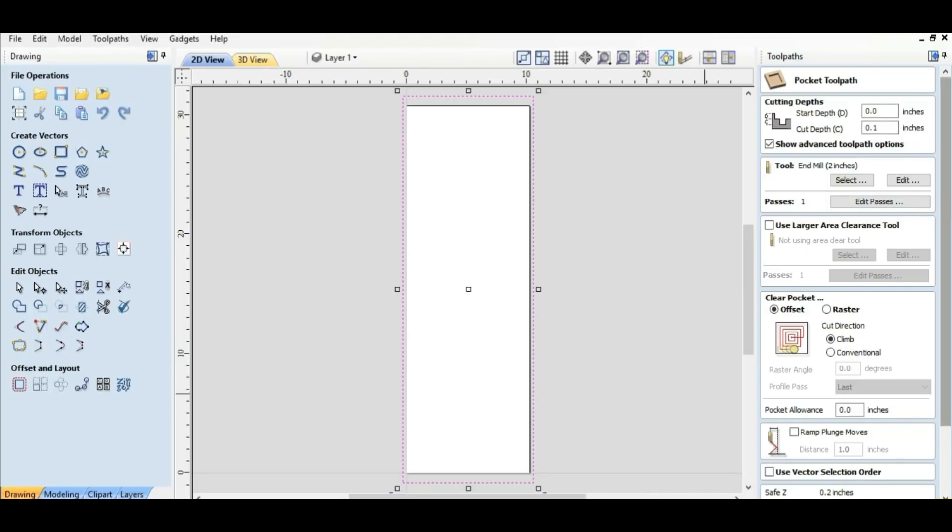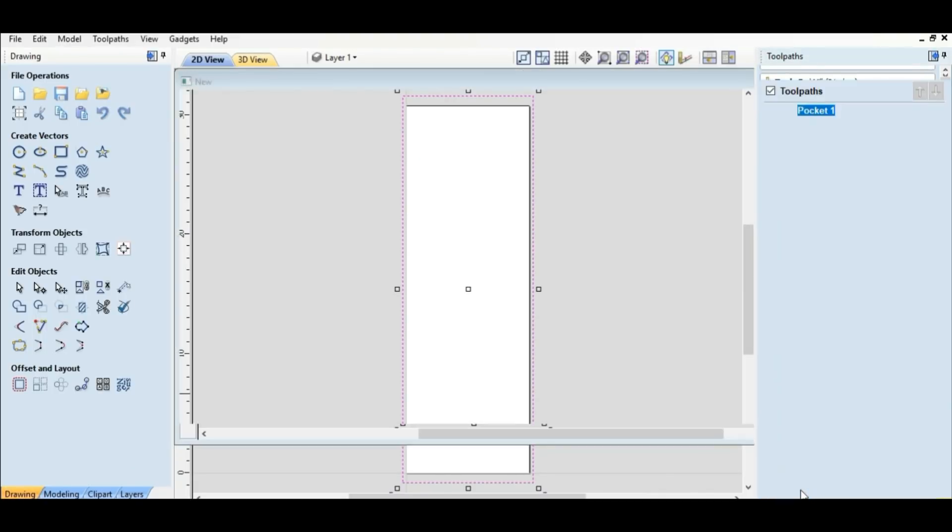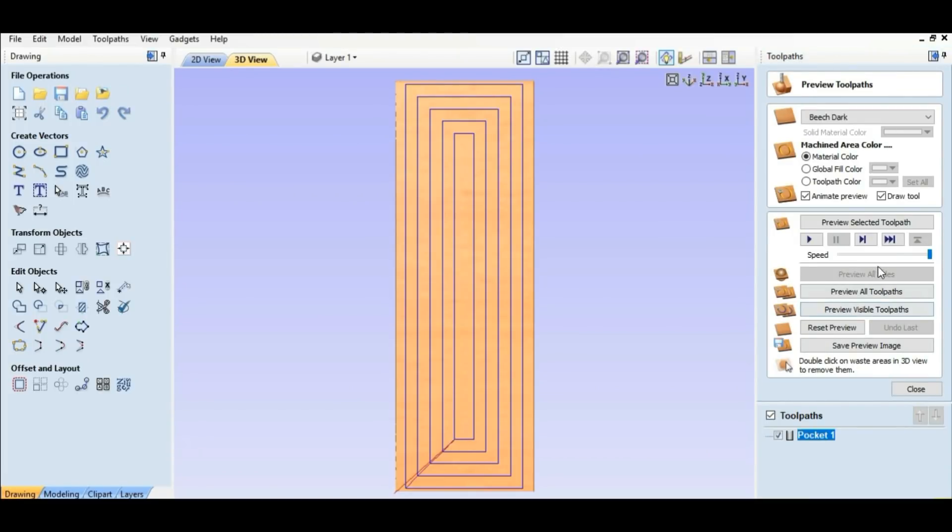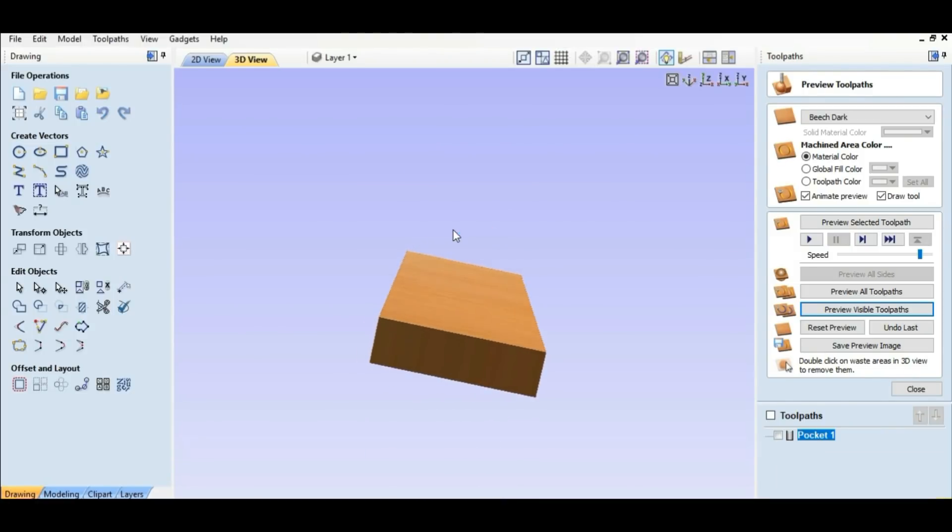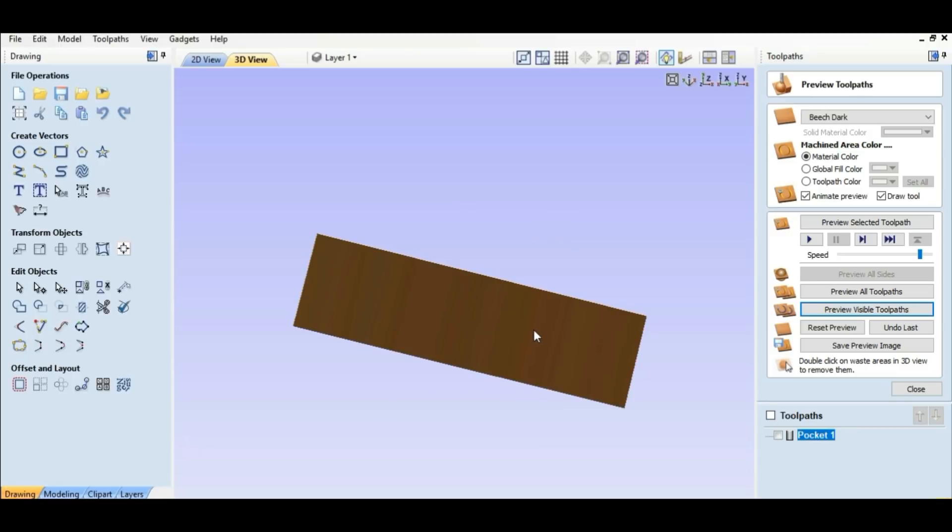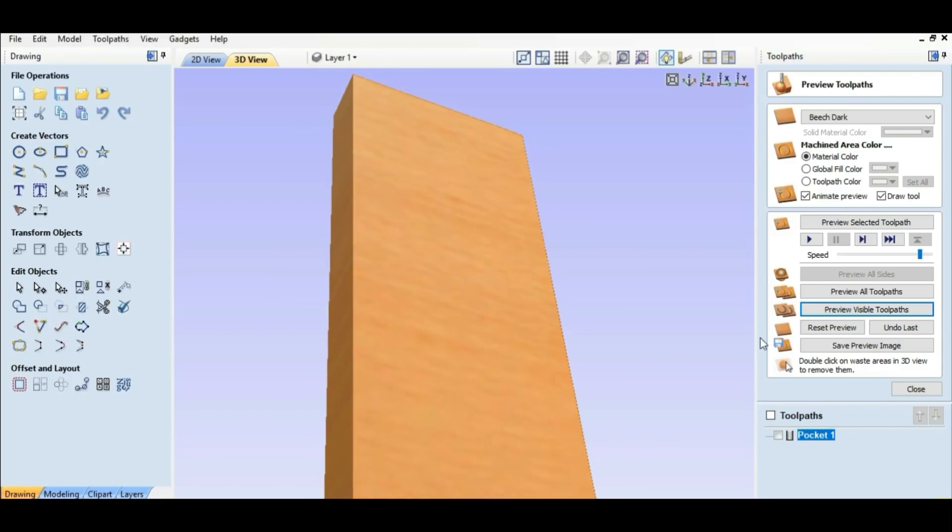So that's all we need to do here. We're going to calculate and we're going to slow this down a little bit. Preview visible toolpaths. We're going to look over here and make sure it got the corners. Looks like it got the corners to me. So we're going to close this.